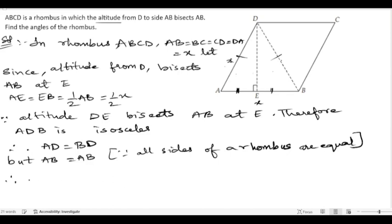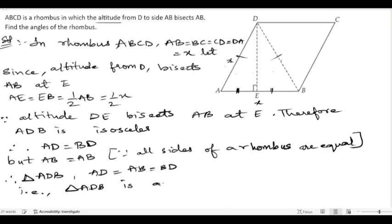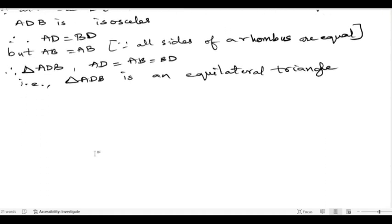For triangle ADB we have all sides equal: AD = AB = BD. Therefore triangle ADB is an equilateral triangle. Since it is equilateral, each angle equals 60 degrees.